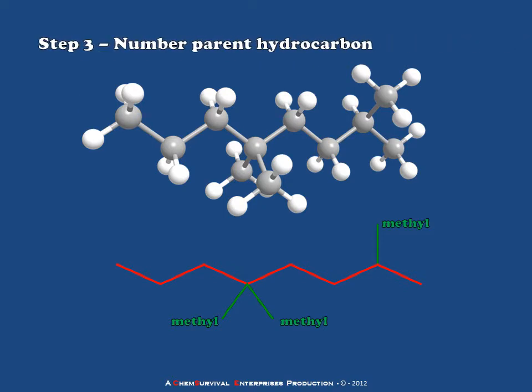In step three, we number the parent hydrocarbon. We can do this from either the left side or the right side, and so to be sure that we get the proper numbering system, let's number it from each side and compare. Starting from the left, I have methyl groups in the four and seven positions. If I instead were to number this compound from right to left, I have methyl groups at the two and five positions. Therefore, I'm going to use the numbering scheme on the lower half of the molecule by virtue of the fact that the lowest number in the scheme is two rather than four.